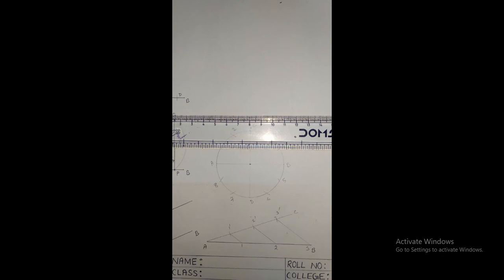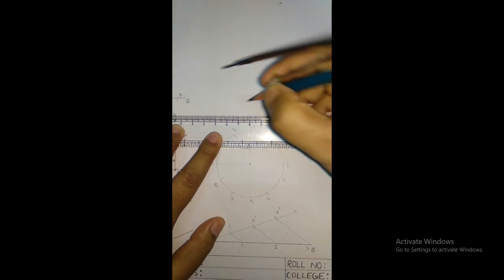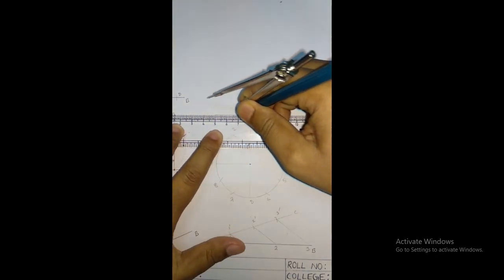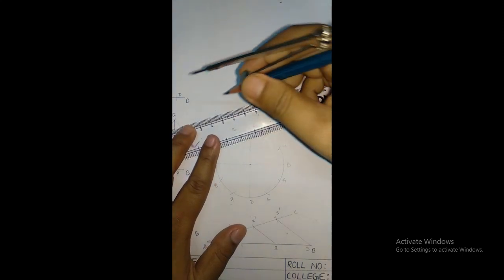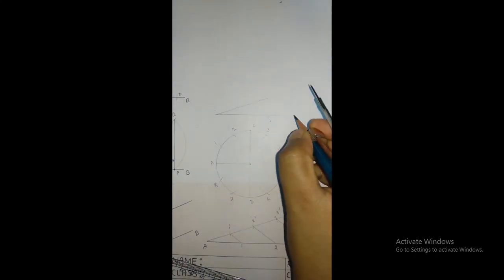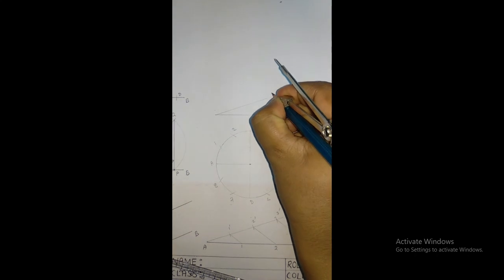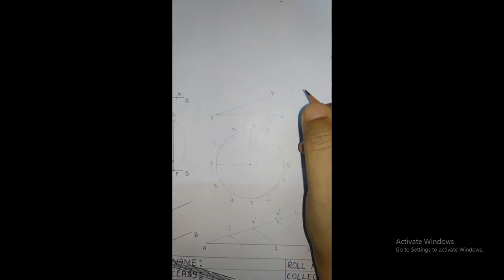Next problem is to bisect a given angle. So suppose this is my given angle. This is A, this is B, and this is C.